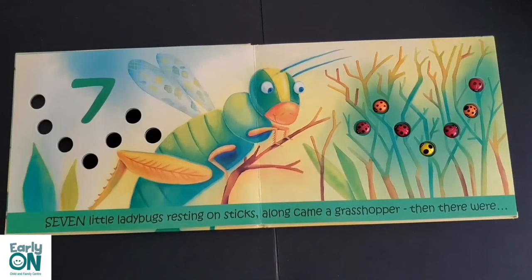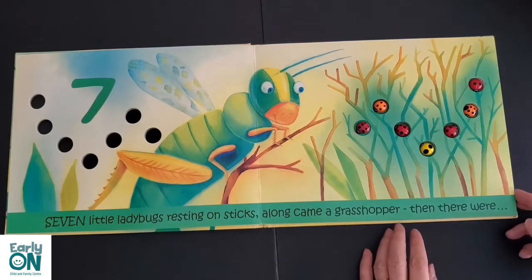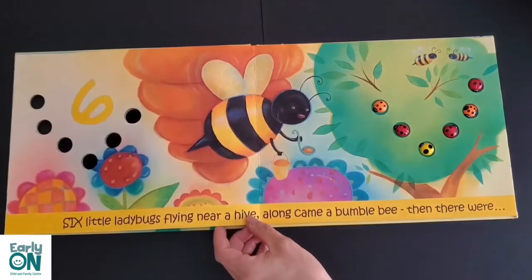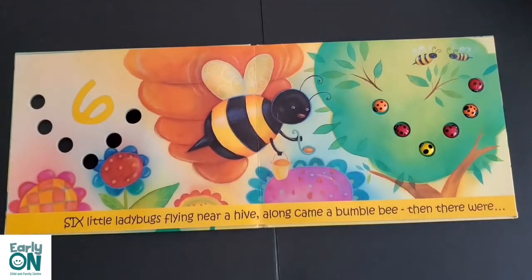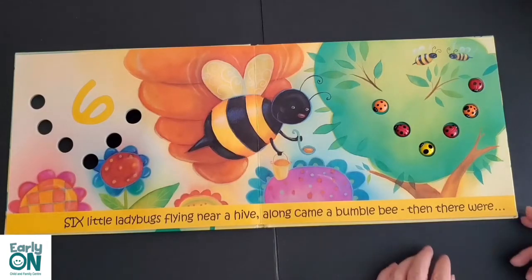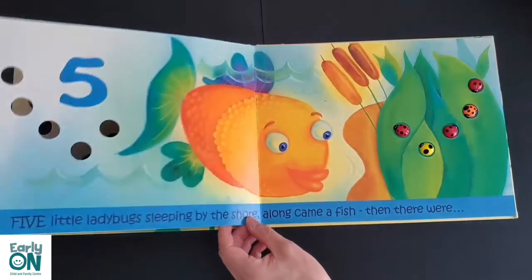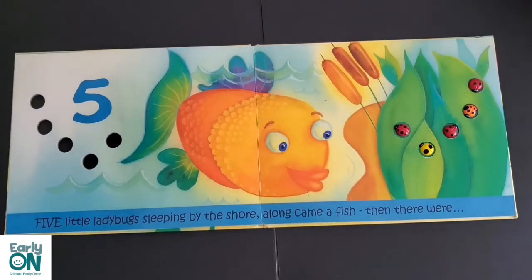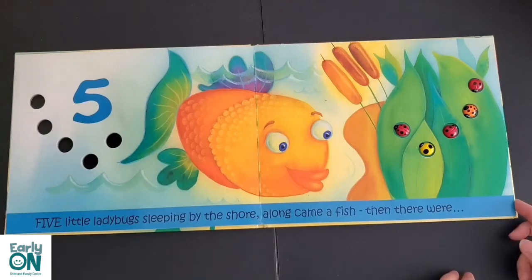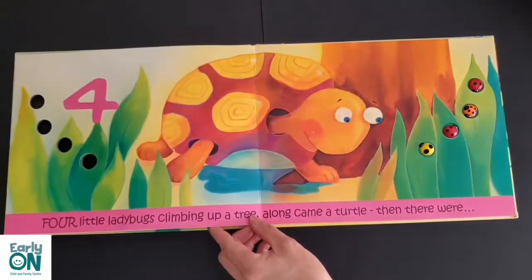Seven little ladybugs resting on sticks. Along came a grasshopper, then there were six. Six little ladybugs flying near a hive. Along came a bumblebee, then there were five. Five little ladybugs sleeping by the shore. Along came a fish, then there were four.